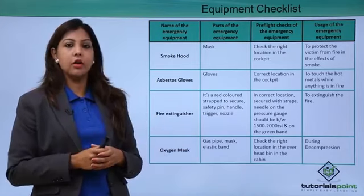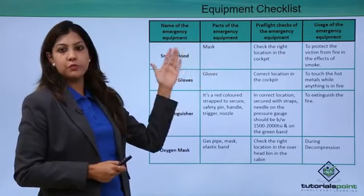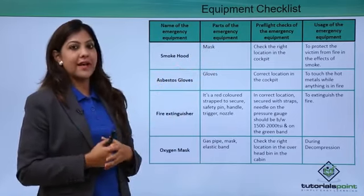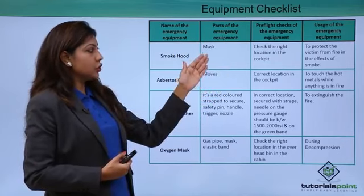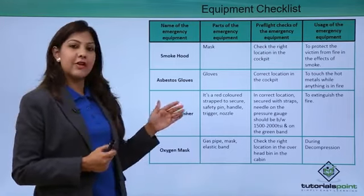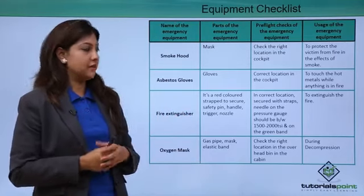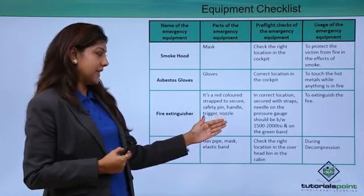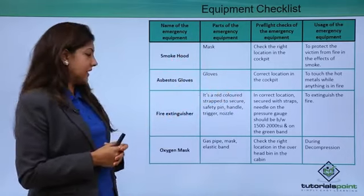Now let's look at the equipment checklist. The smoke hood is a mask located inside the cockpit — not in the cabin — to protect against the effects of smoke and fire. Asbestos gloves are also located in the cockpit area, worn when touching hot metals during a fire situation. The fire extinguisher is a red bottle strapped securely with a safety pin, handle, trigger, and nozzle. The pressure gauge needle must be between 1500 to 2000 PSI and must be in the green band, not the red band zone.